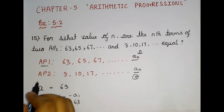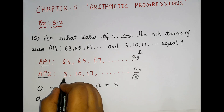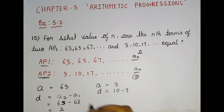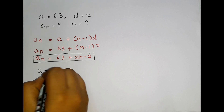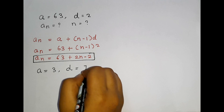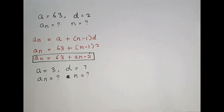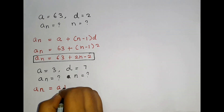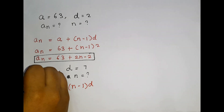Now let us take the a value for AP 2. The a value is 3 and d = a₂ − a₁ = 10 − 3 = 7. So a = 3 and d = 7. We don't know the Aₙ value as well as the n value.